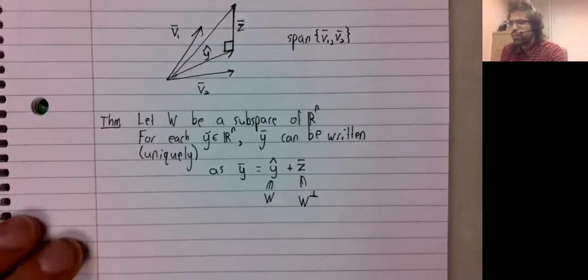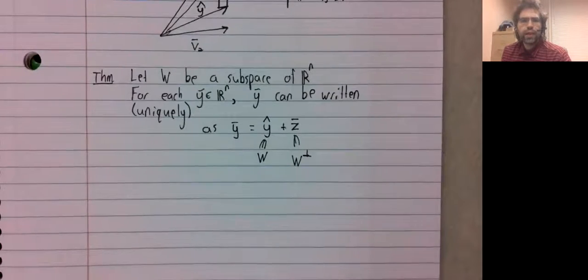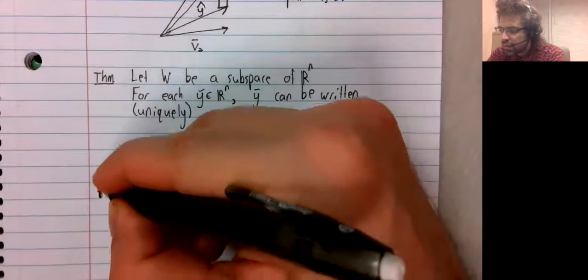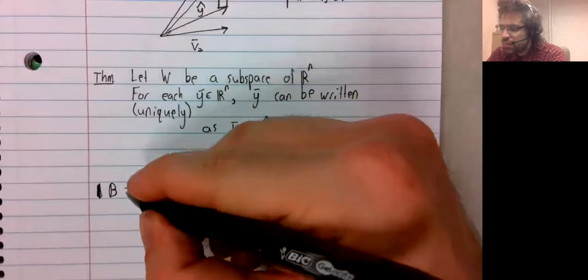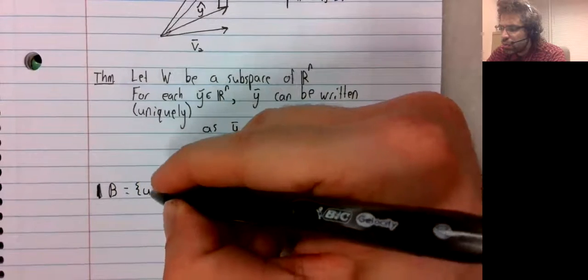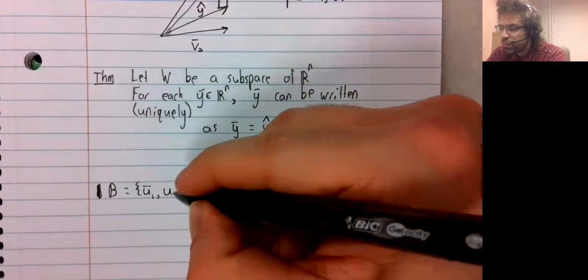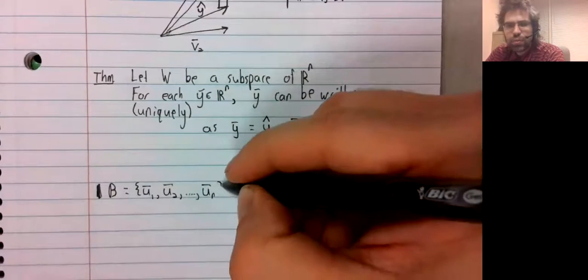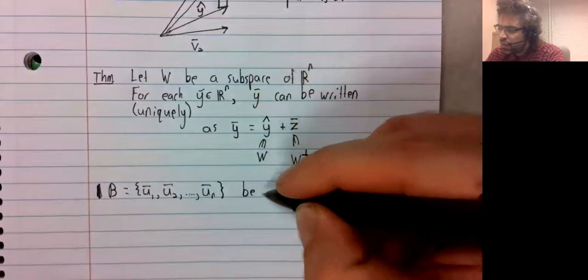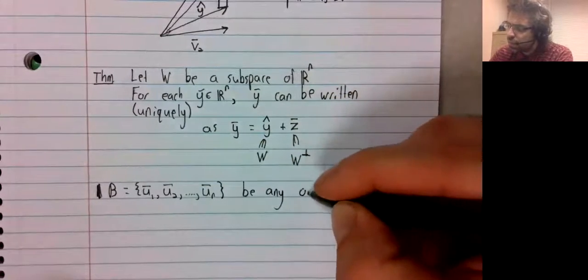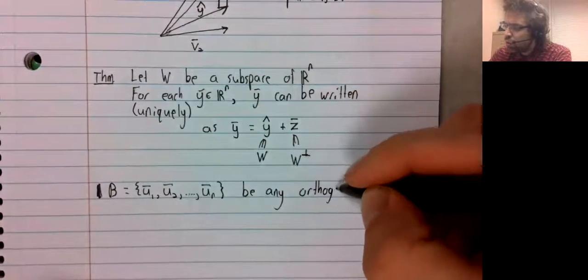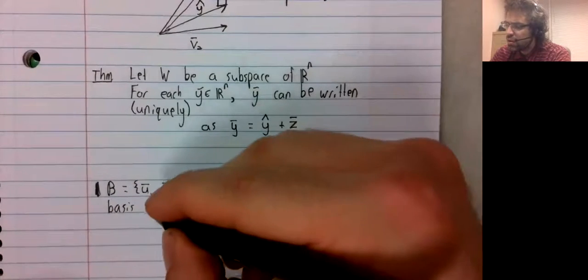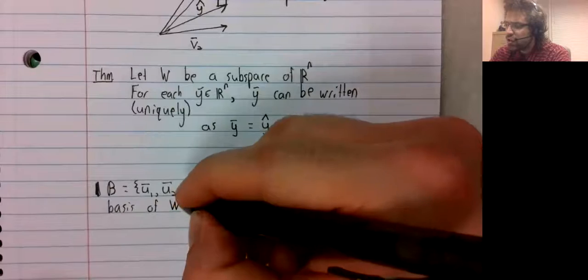Moreover, we have an explicit way to do this. Let B equals u sub one, u sub two, up to u sub p, be any orthogonal basis of W.